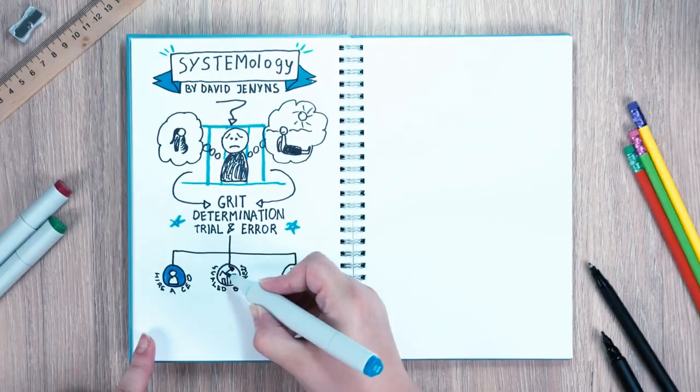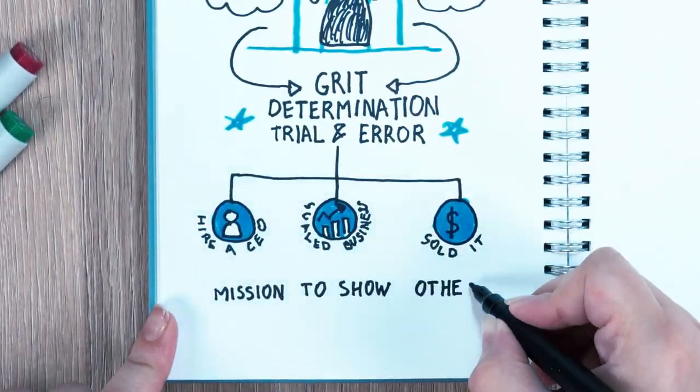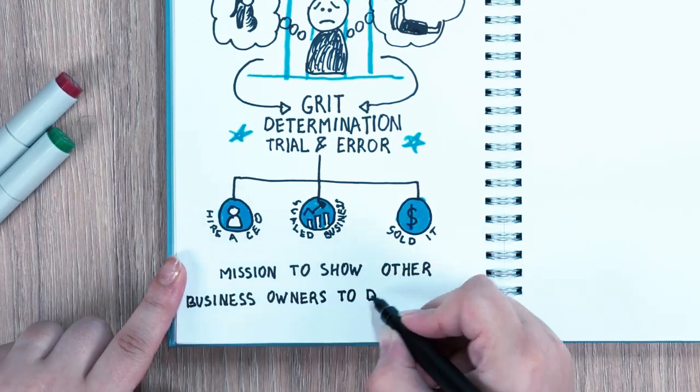At that point, Jennings became a system devotee and made it his mission to show other business owners how to do the same.